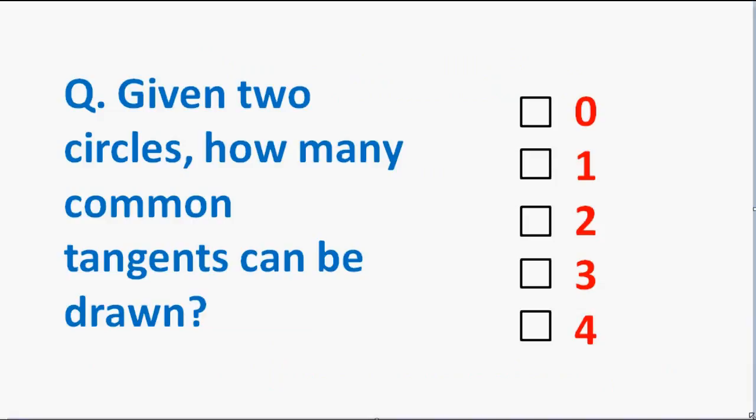Once again, the question is: given two circles, how many common tangents can be drawn? Is it 0, 1, 2, 3, or 4?